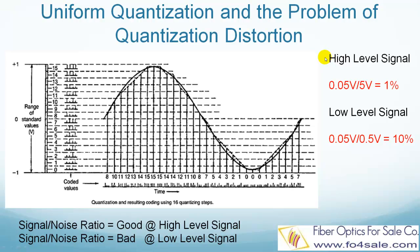In uniform quantization, the quantization distortion presents a problem. For example, let's assume a quantization error of 0.05 volt. If this happens at a high-level signal such as 5 volt, the noise ratio is 0.05 volt divided by 5 volt, which is 1% — not too bad. But if the same quantization error happens at a low-level signal such as 0.5 volt, the noise ratio is 0.05 volt divided by 0.5 volt, which is 10%. Simply put, for uniform quantization, the signal-to-noise ratio is good at high-level signals but bad at low-level signals. That is why non-uniform quantization was introduced.